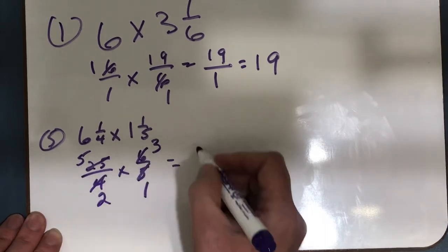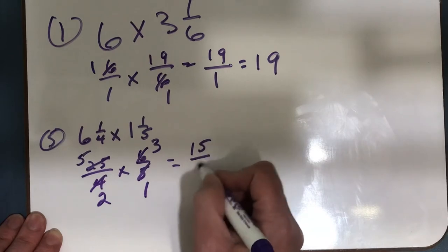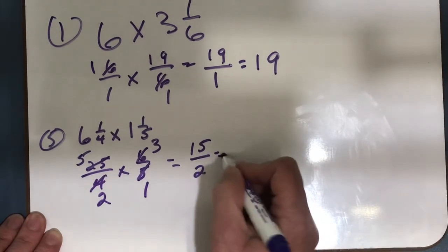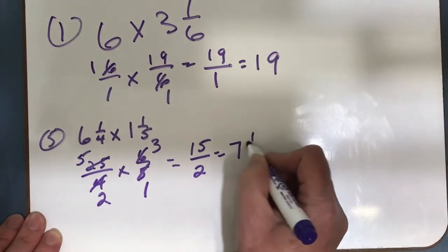Now I can multiply. 5 times 3 is 15, 2 times 1 is 2. 15 halves equals 7 and 1 half.